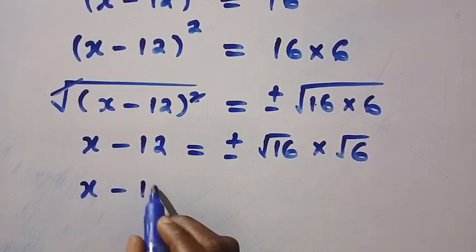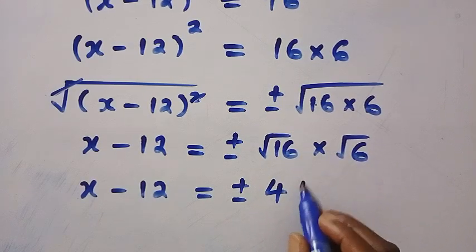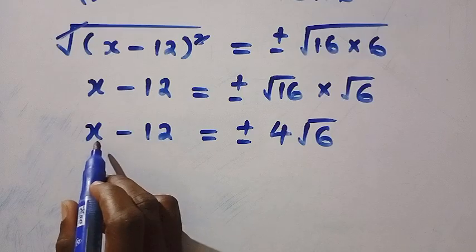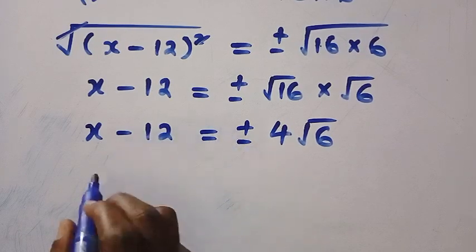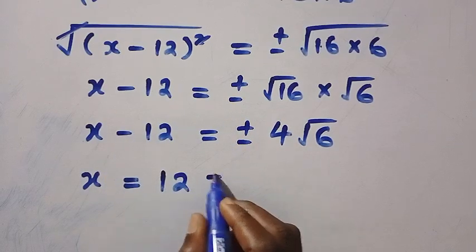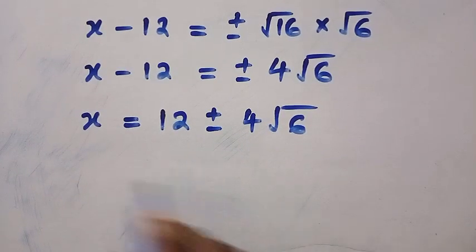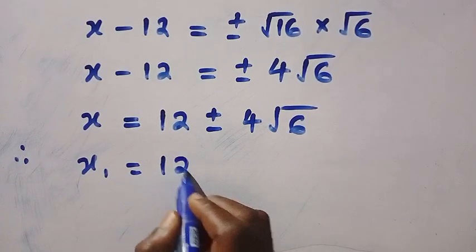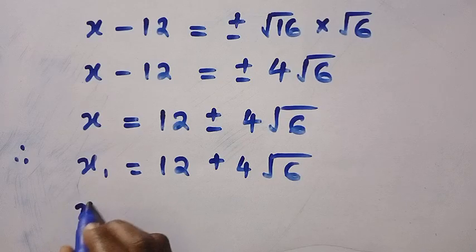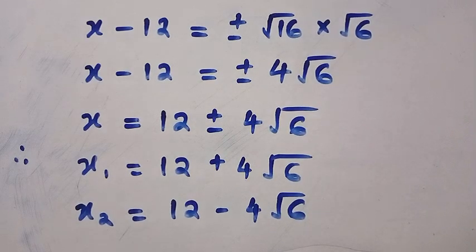So we have X minus 12 equals plus or minus 4 times the square root of 6. Since we need to find X, we take 12 to the other side. There are two values of X: X₁ equals 12 plus 4 root 6, and X₂ equals 12 minus 4 root 6.